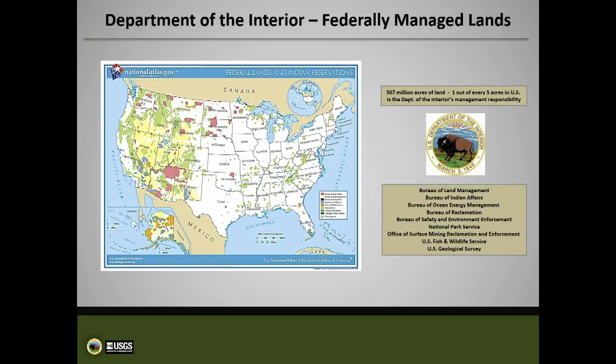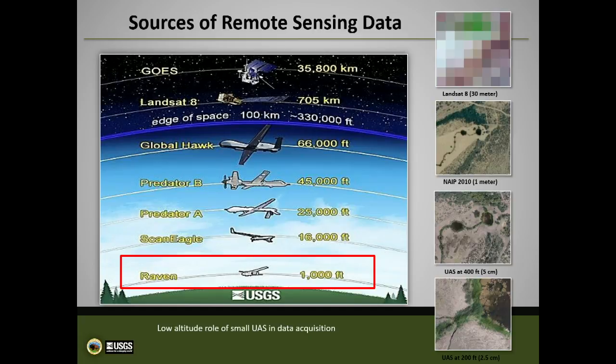I didn't think I had to use this slide, but for our Pennsylvania friends: it's one out of every five acres that the Department of Interior has the responsibility to manage. Most of you know how we're structured with the nine bureaus — BLM, Bureau of Reclamation, Park Service, Fish and Wildlife. But we're the scientific branch — we're the USGS, we don't manage land. In order to be able to manage that amount of land, we have always used satellites and manned aircraft to monitor and manage at that level.